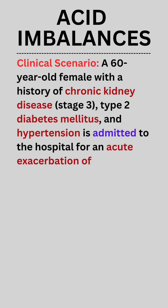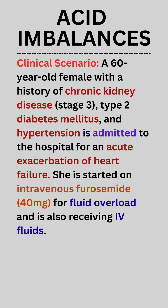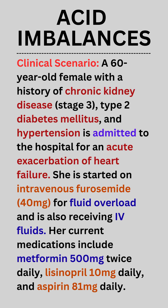Clinical Scenario: A 60-year-old female with a history of chronic kidney disease stage 3, type 2 diabetes mellitus, and hypertension is admitted to the hospital for an acute exacerbation of heart failure. She has been started on intravenous furosemide 40 mg for fluid overload and is also receiving IV fluids.